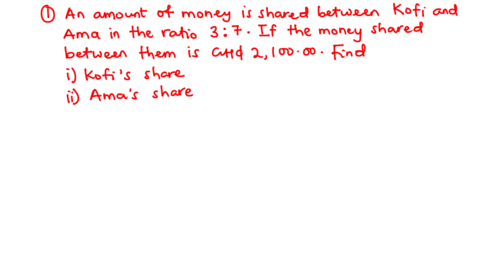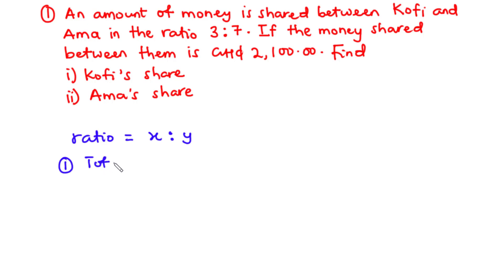Still under ratios, rates and proportion, let's consider the subtopic: proportional division. Proportional division is all about sharing something in a given ratio — this something can be a number, an amount of money, a measurement, etc. Given that something is to be shared in the ratio x:y between two persons, the first thing to do is find the total number of parts, which is found by adding the two values: x plus y.